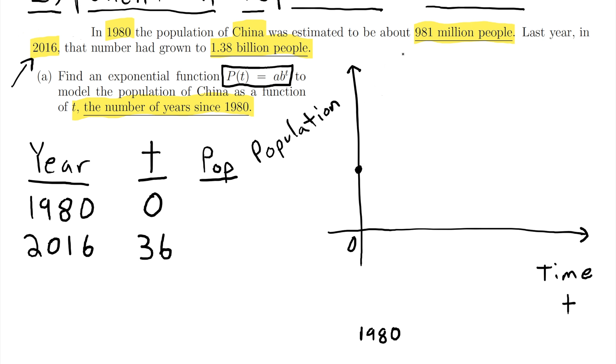So if we think about our population in 1980 we have 981 million people. And then the next important landmark is what happened in 2016. And the population was 1.38 billion people.